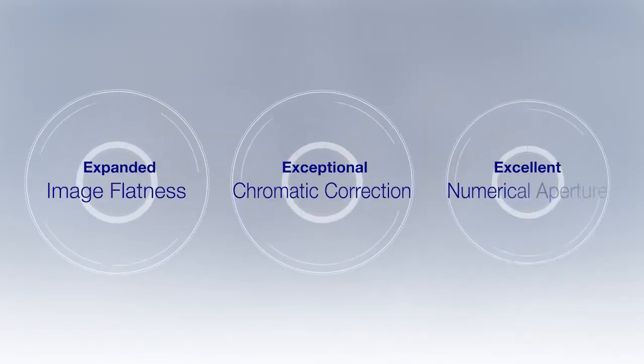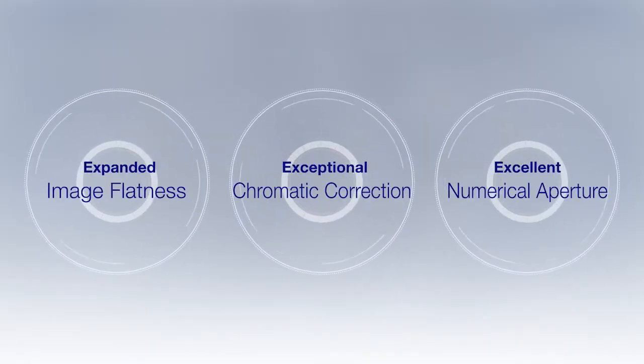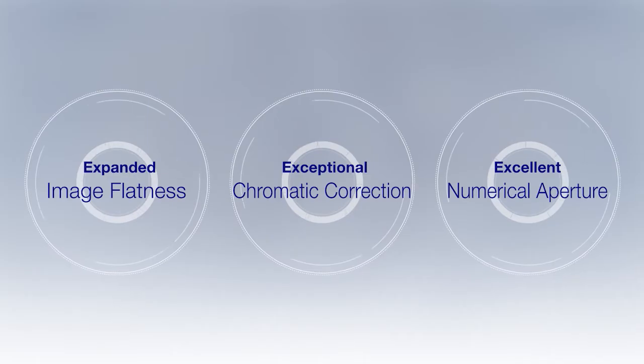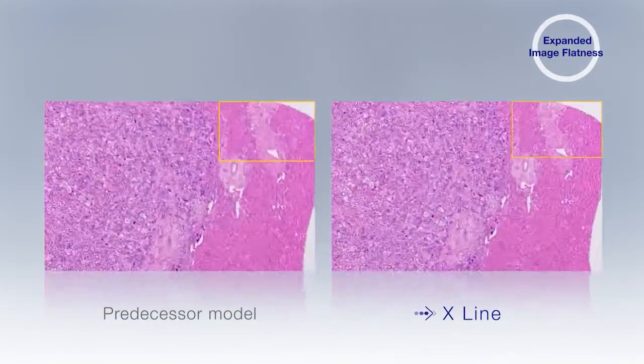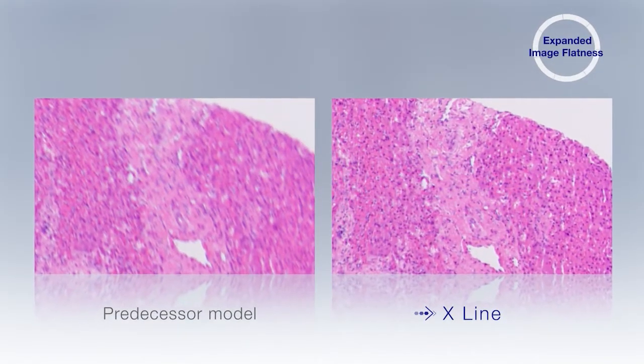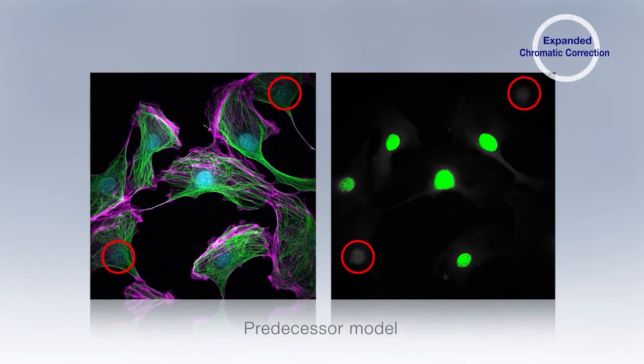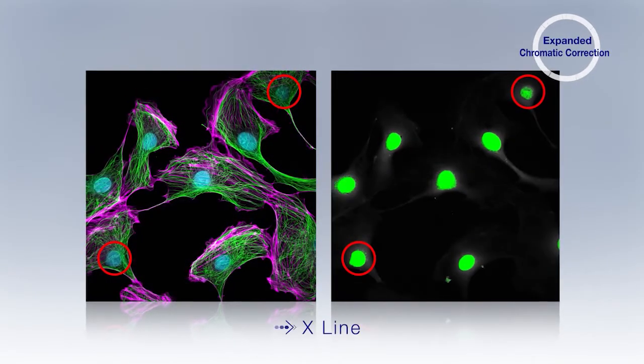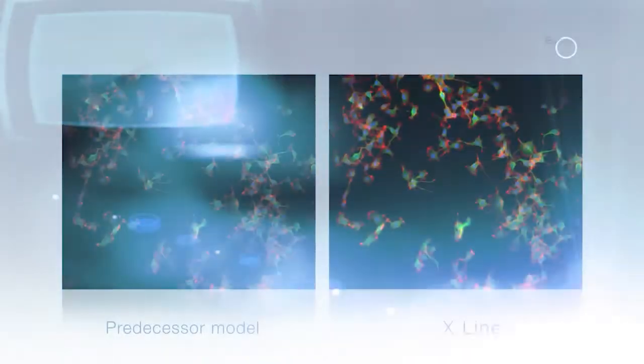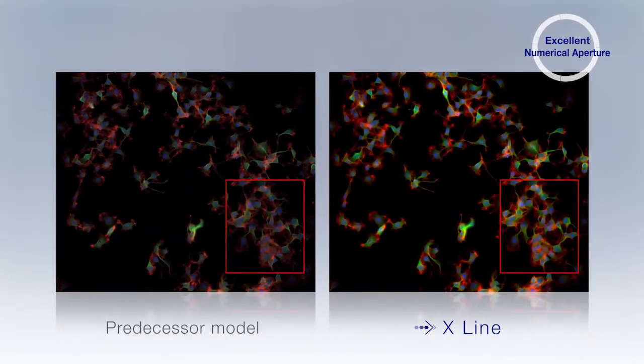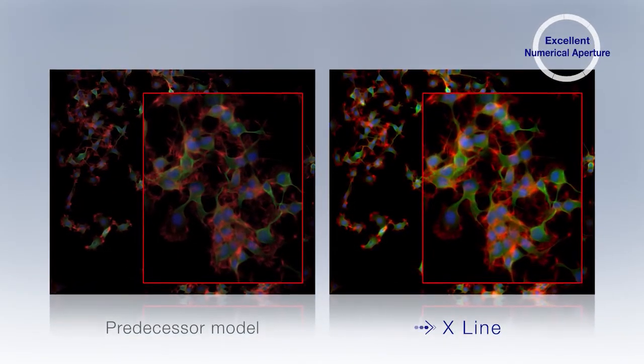These innovative ultra-thin lenses simultaneously deliver three major improvements: uniform, high-quality images over a large field of view, better chromatic correction for multi-color imaging, and high-sensitivity fluorescence observation thanks to a high numerical aperture.